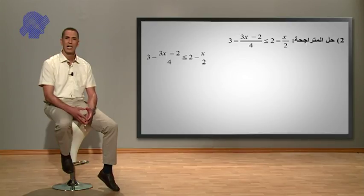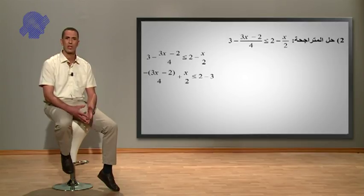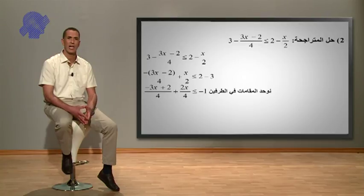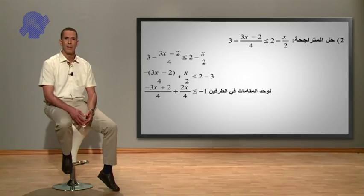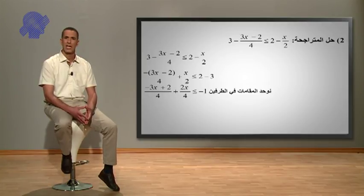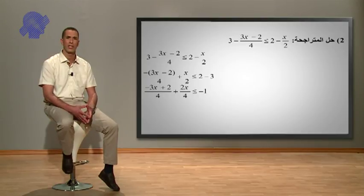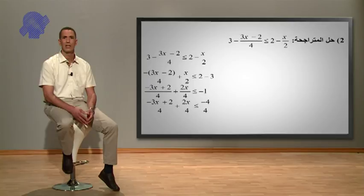نقوم الآن بحل المتراجحة: 3 ناقص (3x ناقص 2) على أربعة أصغر من أو تساوي 2 ناقص x على 2. لنجعل الطرف الأول فيه المجاهل والطرف الثاني المعالم، تصبح المتراجحة: ناقص 3x ناقص 2 على أربعة زائد x على 2 أصغر من أو تساوي 2 ناقص 3. بعد تبسيط نتحصل على ناقص 3x زائد 2 على أربعة زائد 2x على أربعة أصغر من أو تساوي ناقص 1.